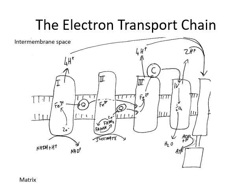Cytochrome C then travels across to cytochrome 4, where it passes off the two electrons. Oxygen is present in cytochrome 4 — each molecule of O2 will accept two electrons, so basically half the oxygen molecule accepts the two electrons, becoming an oxygen ion, which then easily picks up two hydrogens to make water. In the process of electrons being pumped into cytochrome 4 and combined with oxygen, four hydrogens are pumped in but two are used to make water, so in the end only two hydrogens are released into the intermembrane space. In total we have four plus four plus two — ten hydrogens in the intermembrane space under ideal conditions from just one molecule of NADH plus H+.